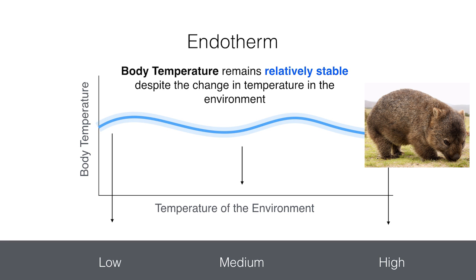In saying that though, homeostasis can only go so far, as the wombat has evolved to adapt to sunny outback Australia. Too long in the freezer and that wombat will be meeting up with the grim reaper. For the record, we don't condone leaving wombats out in the desert or in freezers.